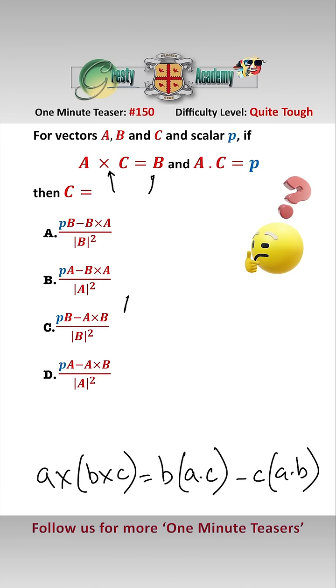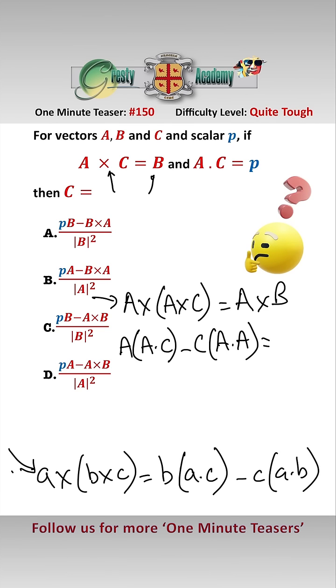As A cross C is a vector and B is a vector, we can cross product with A. So A cross A cross C equals A cross B, and now on this bit we can use this identity here, and that gives us A times A dot C minus C times A dot A equals A cross B.